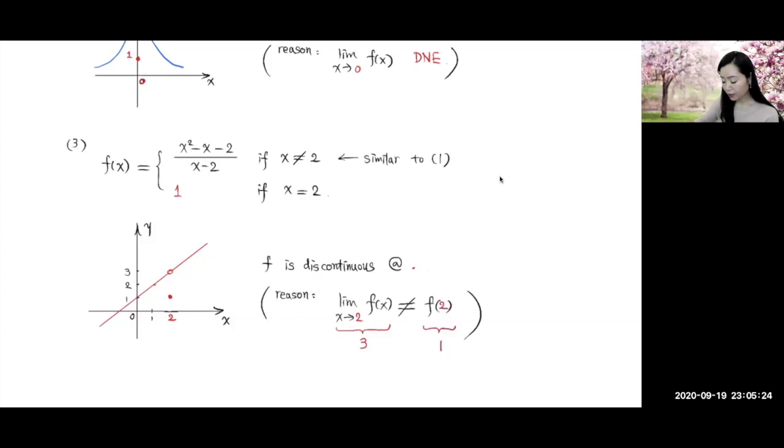However, that's not equal to f of 2 because f of 2 here is equal to 1. So function is defined at 2. The limit exists at 2. However, they don't equal. So the function is discontinuous at 2.